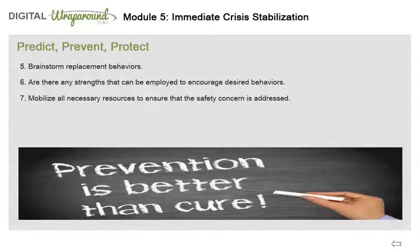Brainstorm replacement behaviors the person can do. Are there simple rules or routines that can be put into place to support the desired replacement behaviors or reduce triggers? Thinking back to when they described what they tried and what worked, or when they were describing their family, are there any strengths that can be employed to encourage desired behaviors? The facilitator's role at this juncture is to mobilize all necessary resources to ensure that the safety concern is addressed so the family will stabilize enough and the wraparound process can move forward.